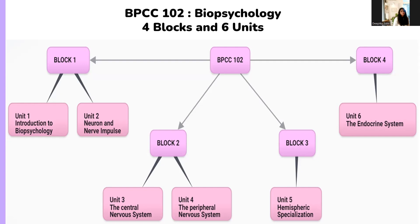Block three discusses hemispheric specialization, also known as brain lateralization. Here we will learn what different parts of the brain do and what roles and actions they play in facilitating the tasks and activities we engage in. Lastly, we have block four which covers the endocrine system.